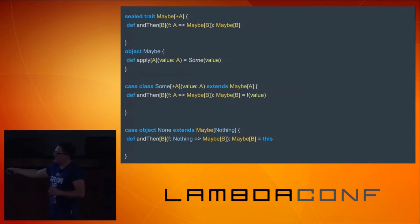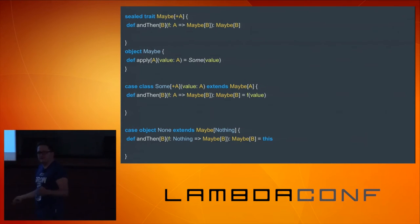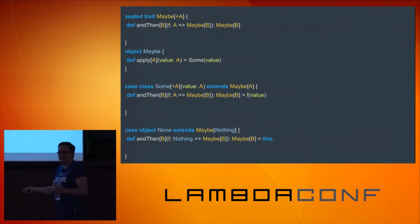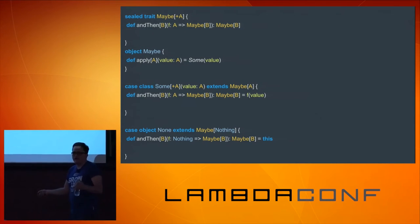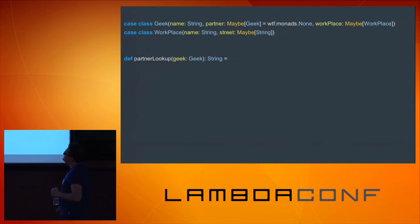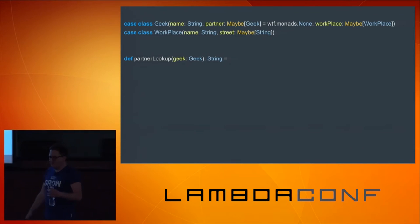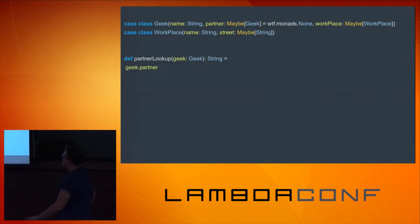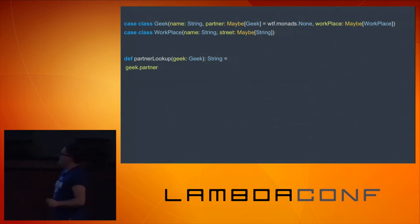For None, basically we don't have any value to run our function F. So we just return ourselves. Having that, we can now implement our partner lookup method one more time.